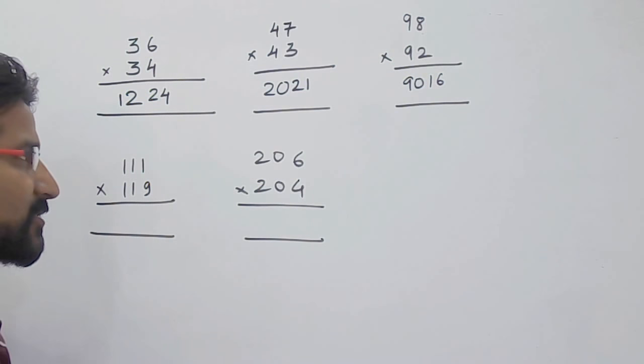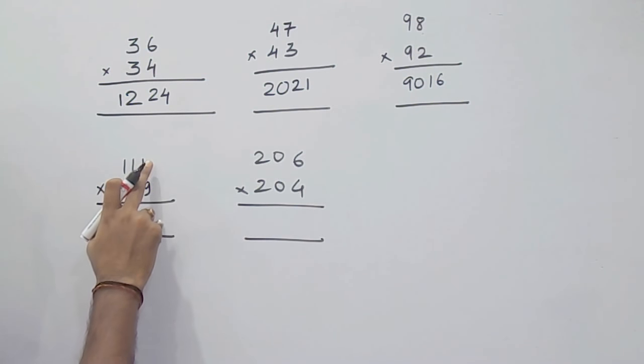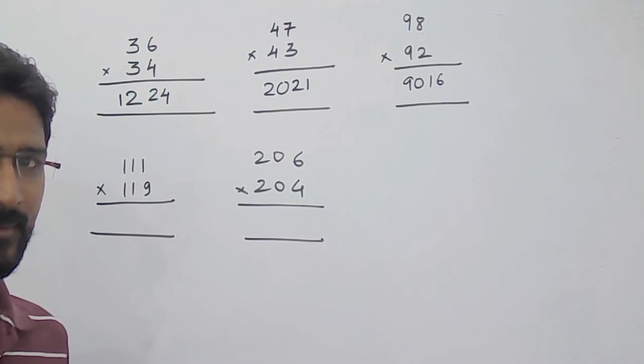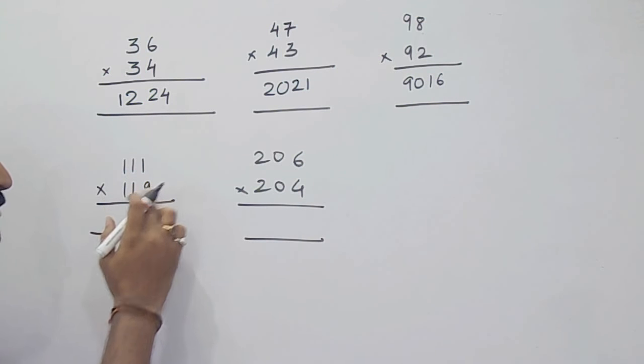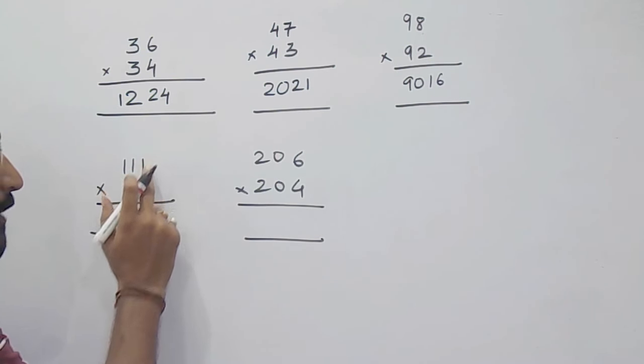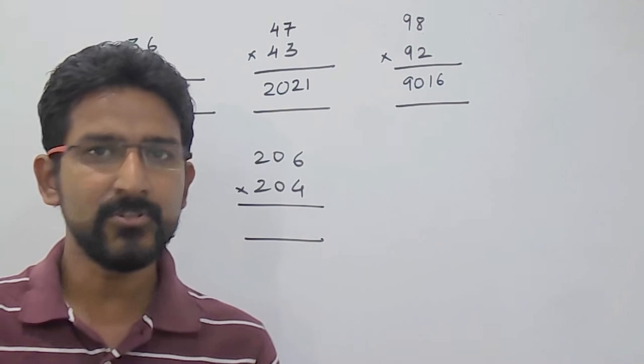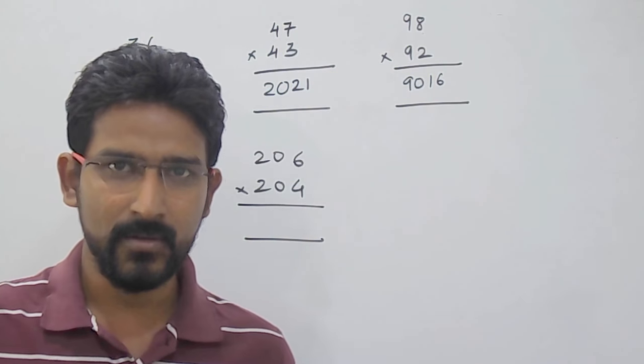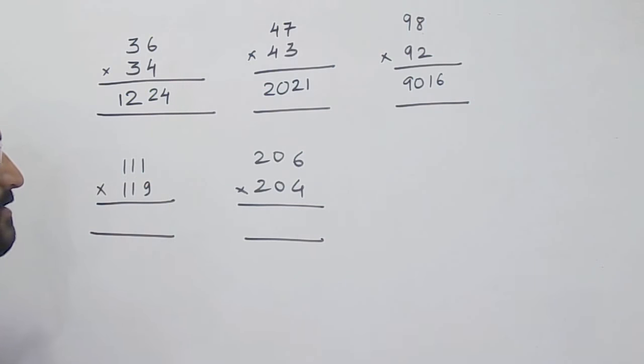Now we see some examples of 3-digit numbers. Again 1 plus 9 is 10, so we can apply this trick. 1 into 9 is 9. But when you multiply the unit place, you should get a 2-digit number. But here we are getting just a 1-digit number. That is 1 into 9 is 9. So when you get a 1-digit number, you have to add 0. So it will become 0, 9.